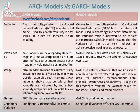GARCH models assume that the variance of the error term follows an autoregressive moving average process. ARCH models were developed by Robert F. Engel in 1980. ARCH(Q) models are quite often difficult to estimate because they frequently yield negative estimates. Whereas GARCH models were developed by Boleslev in 1986 in order to resolve the problem of negative estimates.